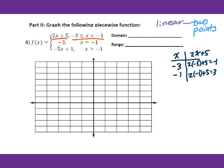Check for open or closed circles. At negative 3 there's an equal sign, so closed circle. At negative 1 there's no equal sign, so open circle. Plot negative 3 and negative 1 — closed circle at (negative 3, negative 1) — then plot (negative 1, 3) as an open circle, and connect these two points.